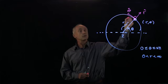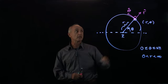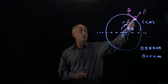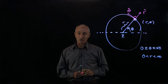This is at right angles to r hat, pointing in the direction of increasing theta. And so at this point, we now have a set of unit vectors.